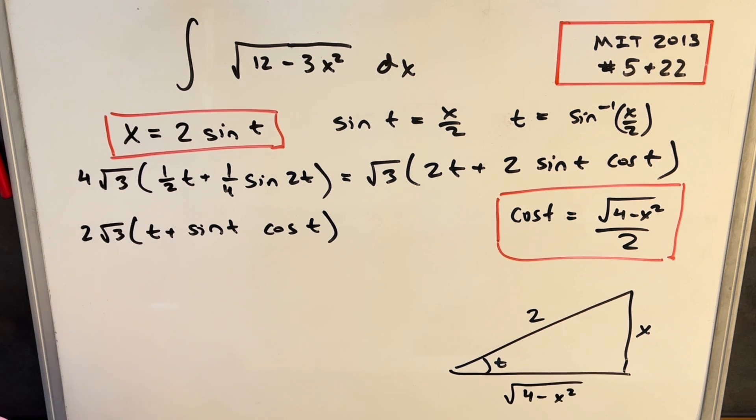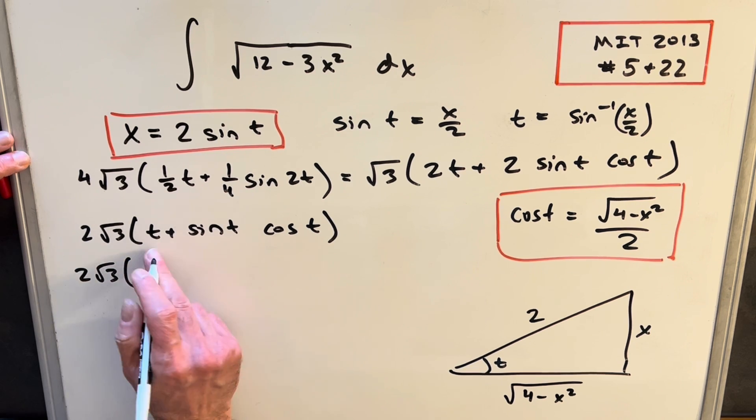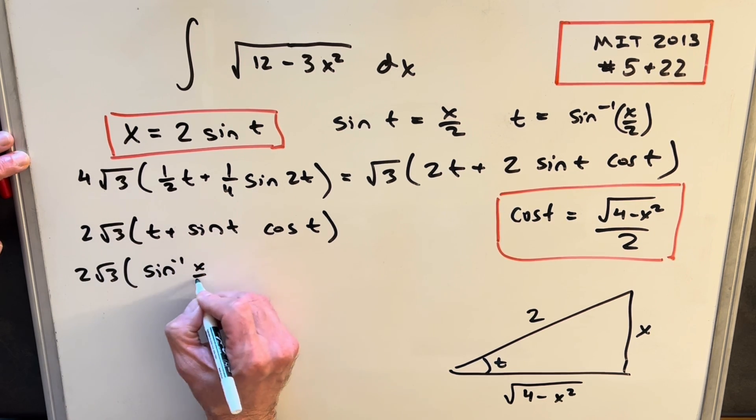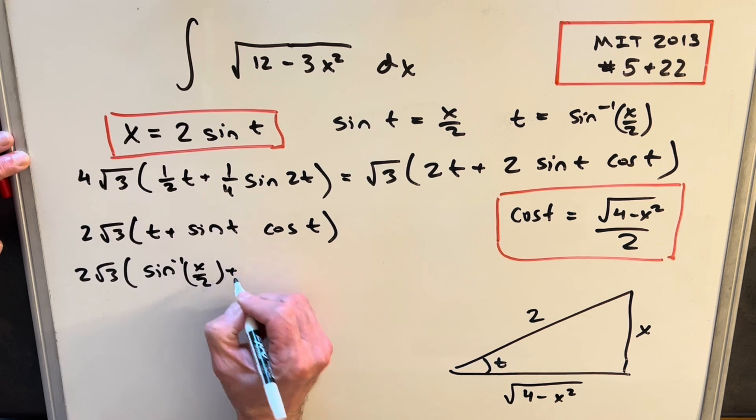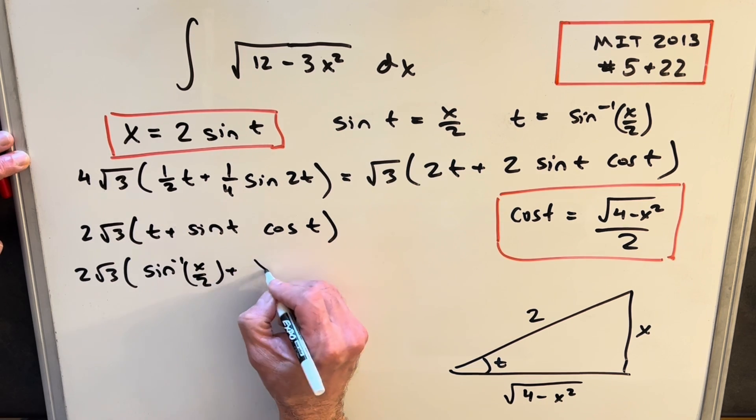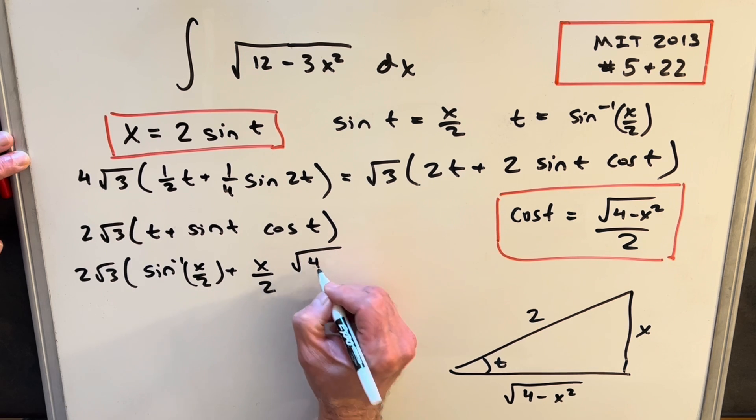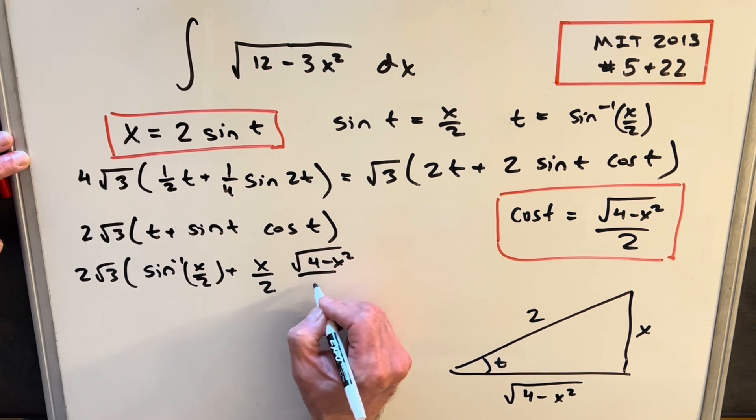Okay, so now I have everything to back substitute, so we'll rewrite this. We're going to have square root of 3. Our t value is here. So we have sine inverse x over 2 plus sine of t, which is going to be x over 2, times cosine of t, square root of 4 minus x squared over 2.